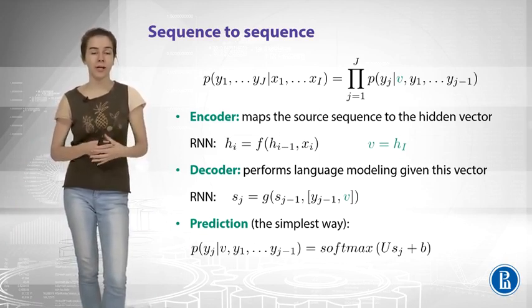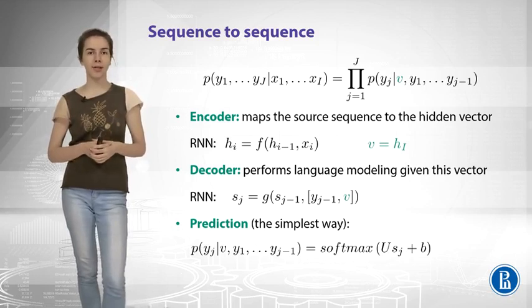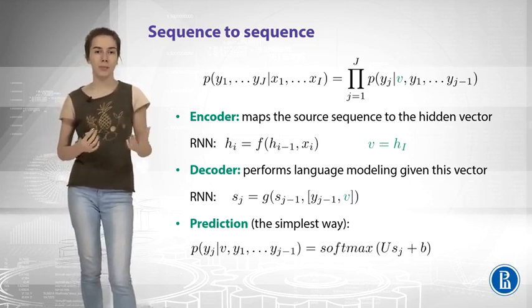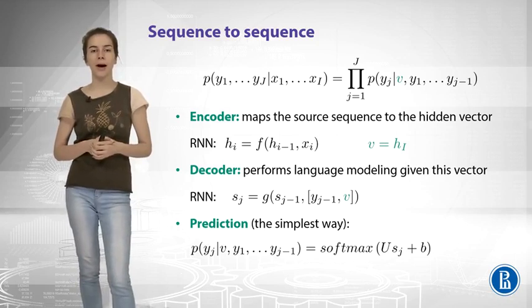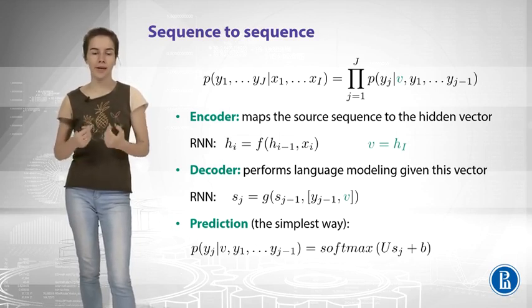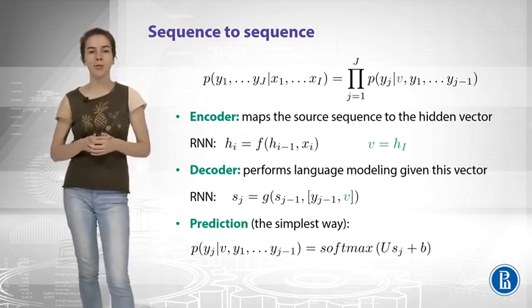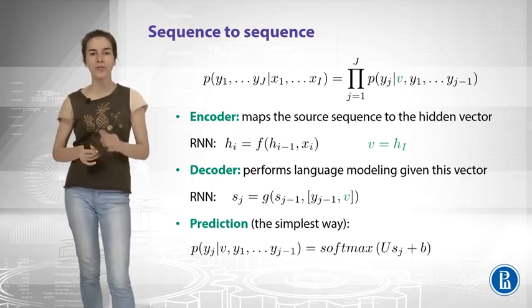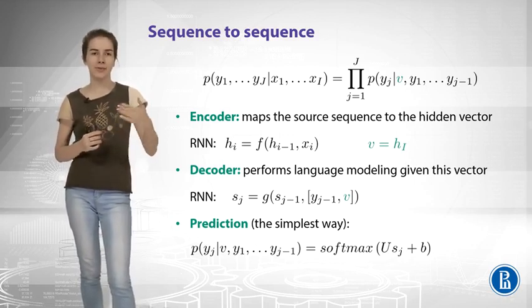Okay. The decoder is also the recurrent neural network. However, it has more inputs, right? So you see that now I concatenate the current input Y with the V vector. And this means that I will use all kinds of information, all those three inputs in my transitions.